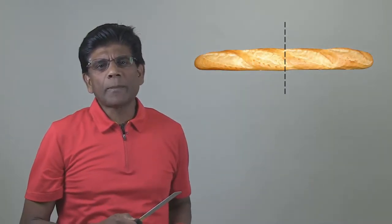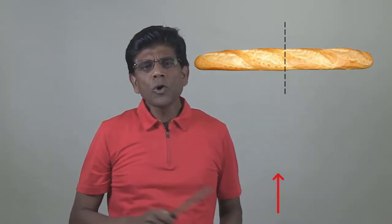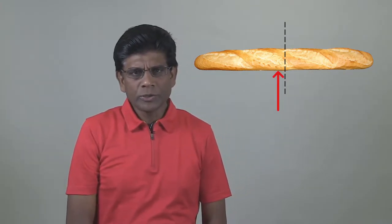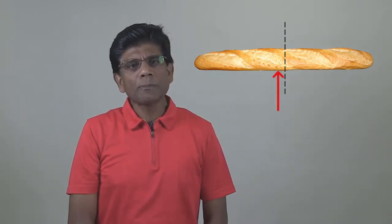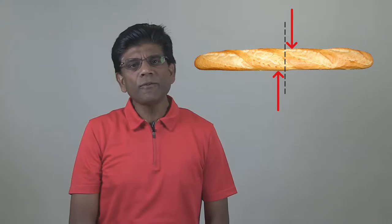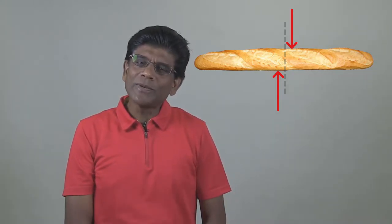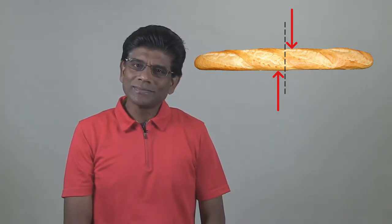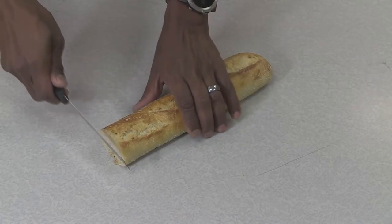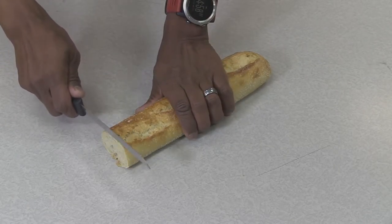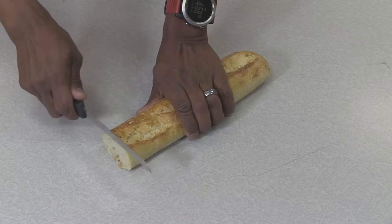Take a look at the free body diagram of this scenario. The force applied by my hand to hold the bread in place and the force applied by the knife are shown. Notice the shear plane in between the forces. As I slice this bread, the shear force is applied parallel to this cross-section.